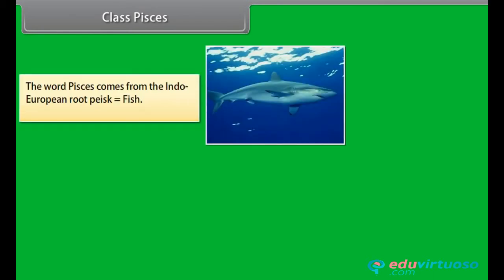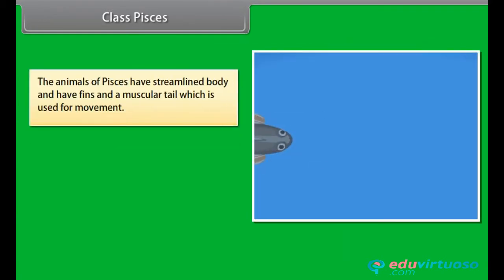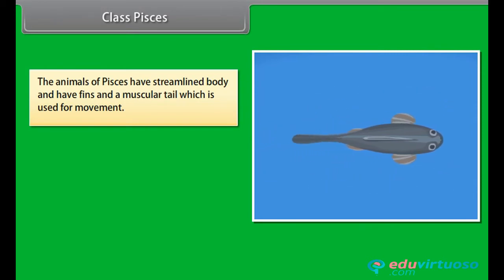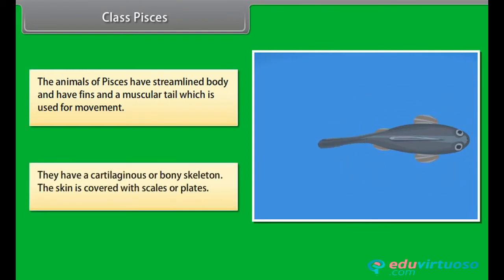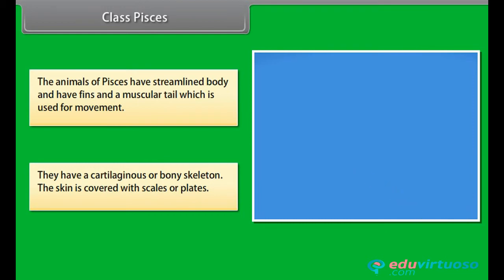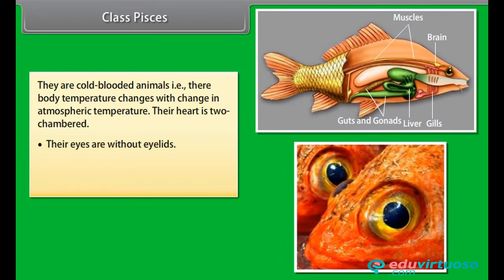Class Pisces. The word Pisces comes from the Indo-European root pisc, meaning fish. They are exclusively aquatic animals. They obtain oxygen dissolved in water by using gills. The animals of Pisces have a streamlined body and have fins and a muscular tail used for movement. They have a cartilaginous or bony skeleton. Their skin is covered with scales or plates. They are cold-blooded animals, meaning their body temperature changes with change in atmospheric temperature. Their heart is two-chambered. Their eyes are without eyelids. They have nostrils. They lay eggs.